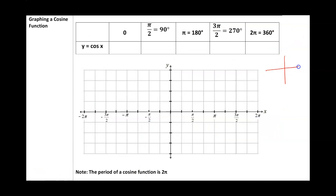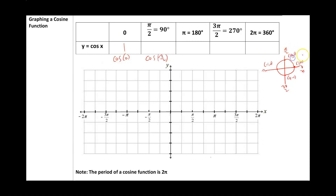Now let's talk about cosine. I'm going to draw the unit circle again: zero, pi over two, pi, three pi over two, and two pi. Our points are (1, 0), (0, 1), (-1, 0), and (0, -1). Remember, cosine is always going to be the x-value of any ordered pair on the unit circle. Cosine of zero is 1. Cosine of pi over two — the x-value is zero. For pi, the x-value is -1. For 3pi over two, the x-value is zero. For 2pi, the x-value is 1.